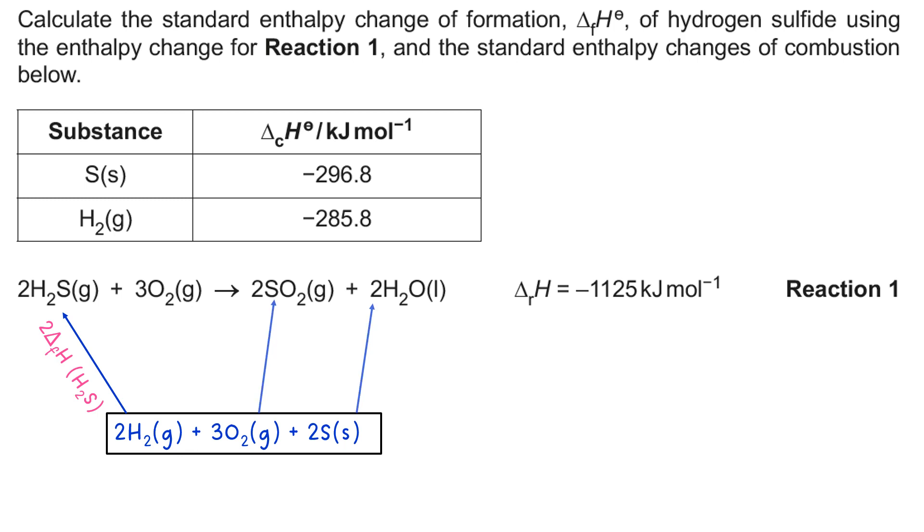So if we put in the arrows, because I think that's the only direction we can put the arrows, we'd have 2 times ΔfH of SO2 and 2 times ΔfH of H2O. Now you might have noticed that the data in the question is ΔcH, so why am I talking about ΔfH all of a sudden?